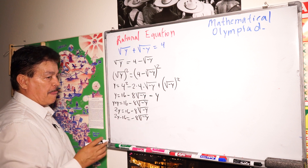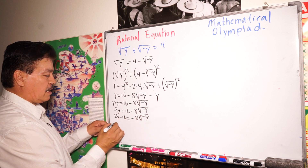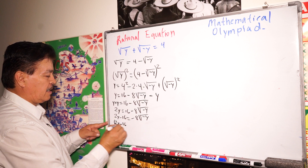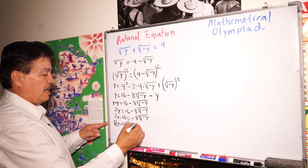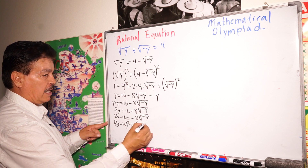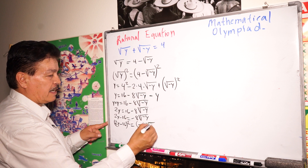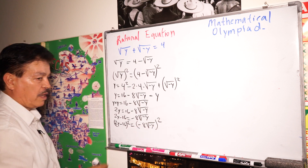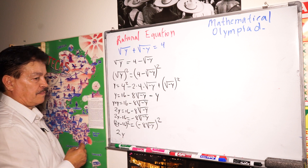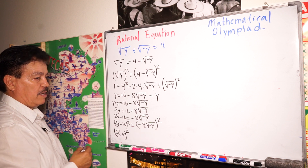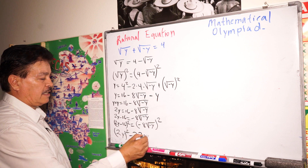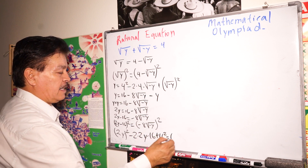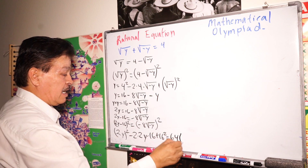Now raise both sides to the second power. So (2y minus 16) squared equals (negative 8 times square root of negative y) squared. Expanding the left side: (2y)² minus 2 times 2y times 16 plus 16 squared equals 64 times negative y. That gives us 4y² minus 64y plus 256 equals negative 64y.